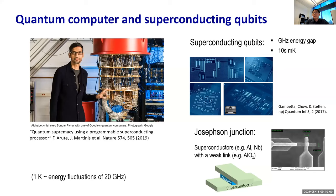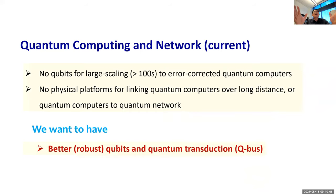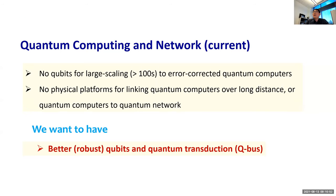The question is how we will see the next generation of qubits and quantum communication systems. Right now, we don't even have a qubit for larger scaling to over hundreds for error-correcting quantum computers. We actually don't have a physical platform for linking quantum computers over long distances, or linking quantum computers to quantum networks. We're in the early stage of the quantum revolution. What we want is a better qubit and better transducers to get to the next step — a quantum leap to the next generation of qubits.